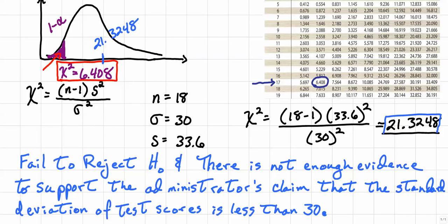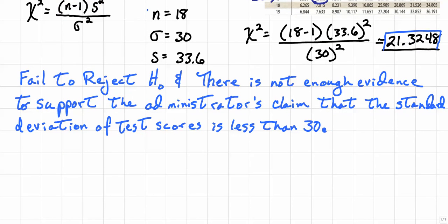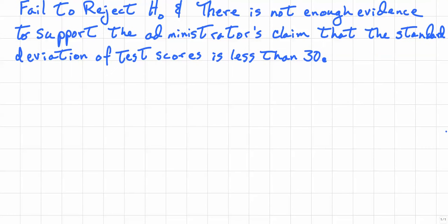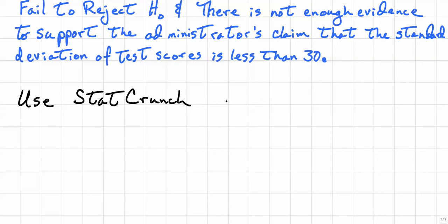We can also do this by calculating a p-value using technology, specifically StatCrunch, to determine whether to reject or fail to reject the null hypothesis. You should get the exact same answer whether you use the chi-square value or the p-value. The p-value is compared to the level of significance. The same values apply: n equals 18, s equals 33.6, and sigma equals 30.